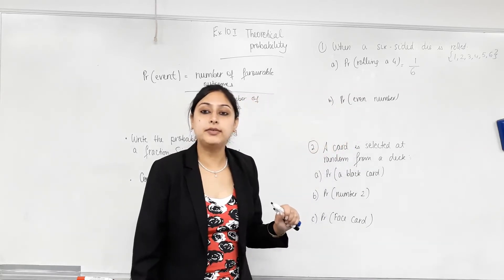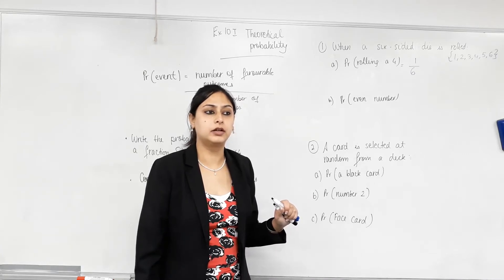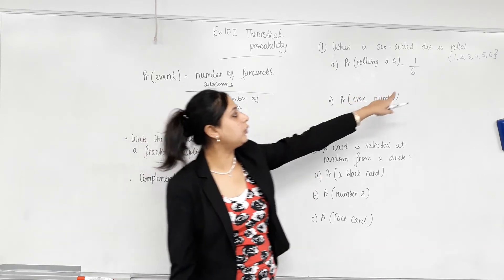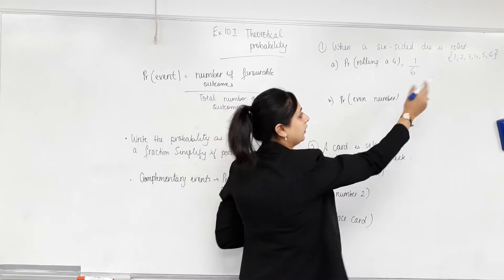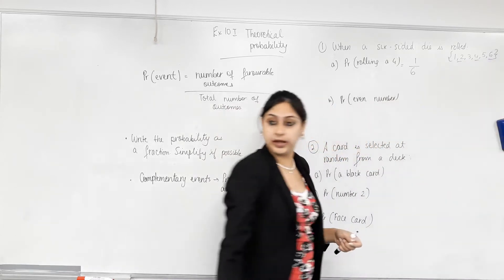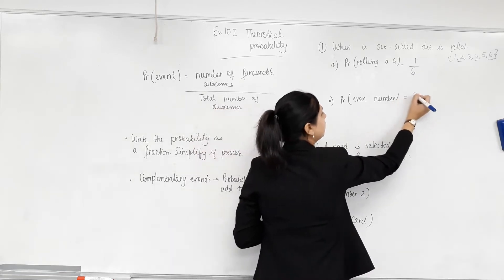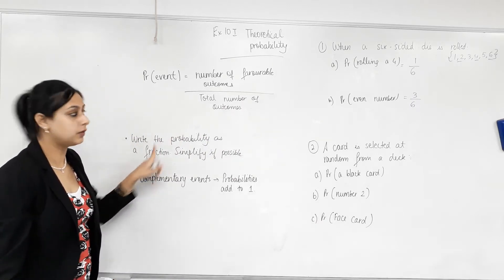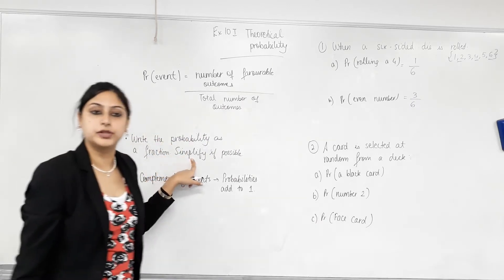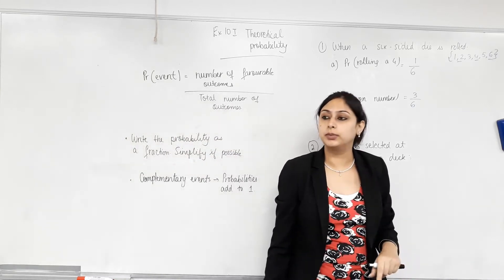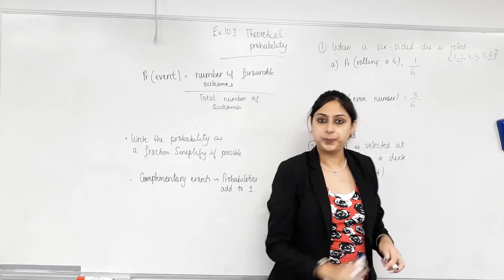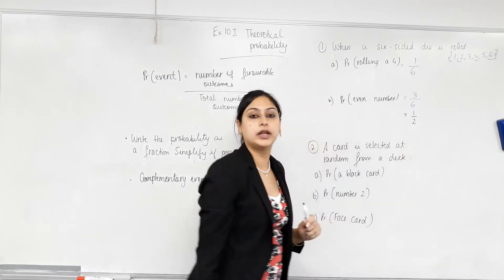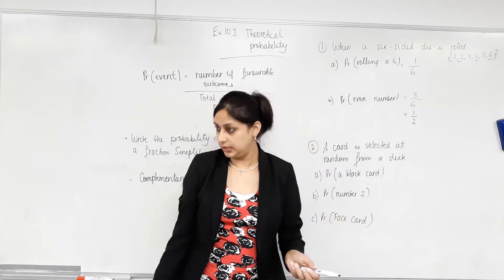Probability of rolling an even number. What's the definition of an even number? A number that can be divisible by 2. How many even numbers are there on a die? Three. So three even numbers — and what's the total outcomes? Six. We use this formula and then we simplify if possible. Three and six — do they have a factor in common? Yes, they're both divisible by three. Three divided by three is 1, and six divided by three is 2. So the probability of getting an even number is half — an even chance.